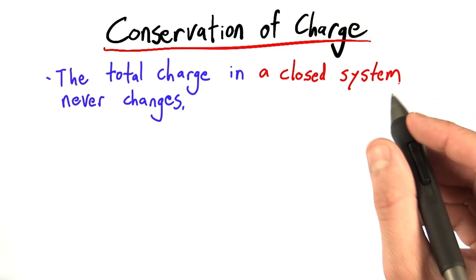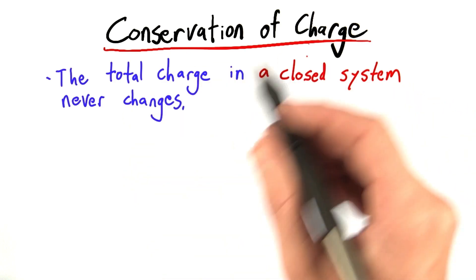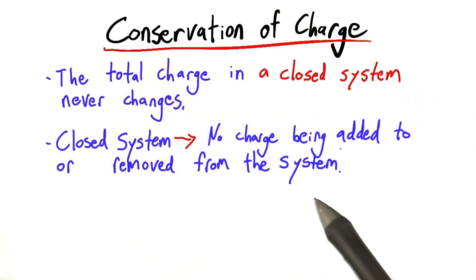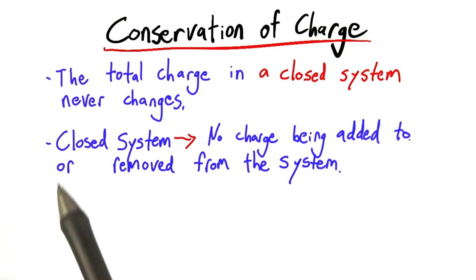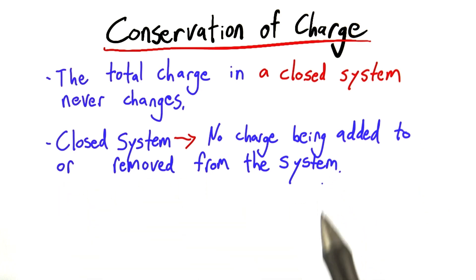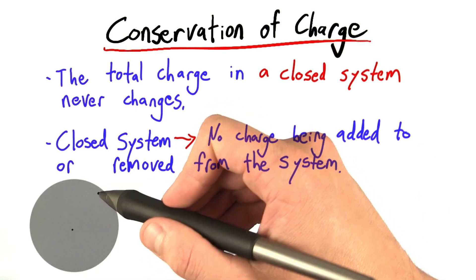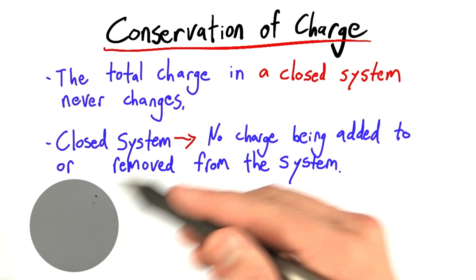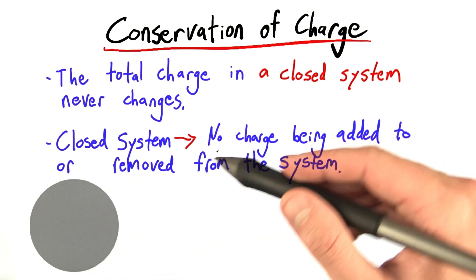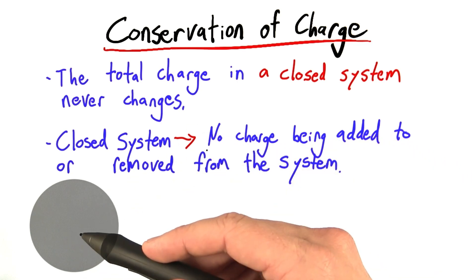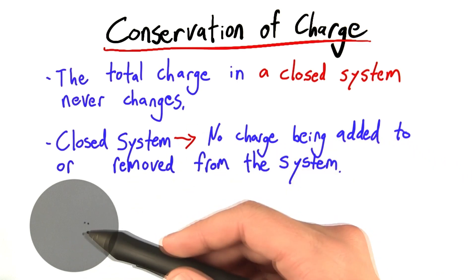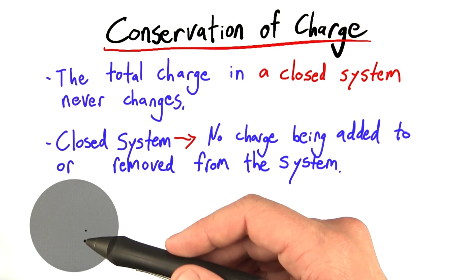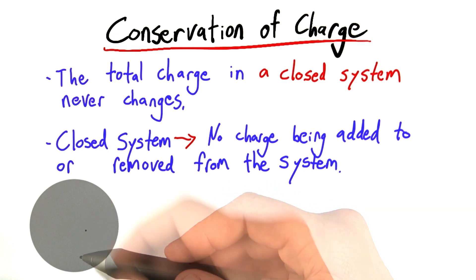What does this mean? What's a closed system? Well, for the purpose of conservation of charge, a closed system means that there's no charge being added to or removed from the system. For example, let's imagine a metallic sphere — in this case, a closed system. Nothing is touching it, it's just hanging out somehow, with no charge being introduced to or removed from it.